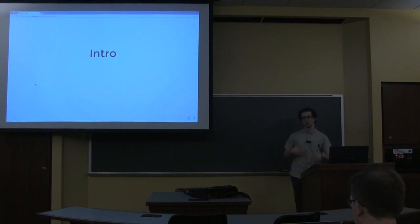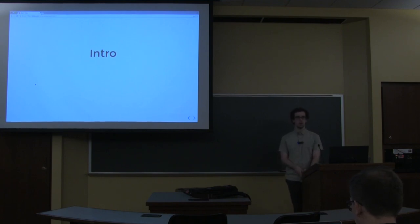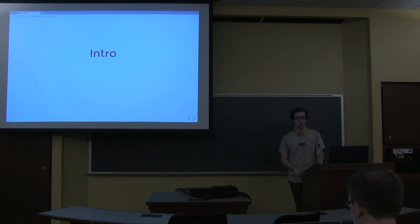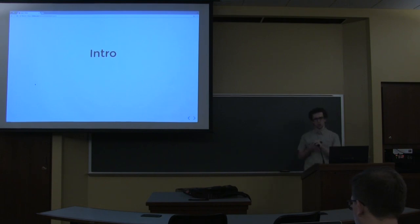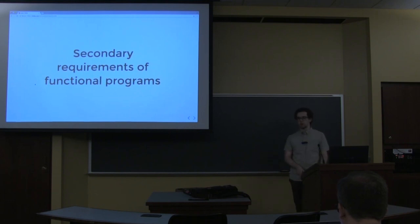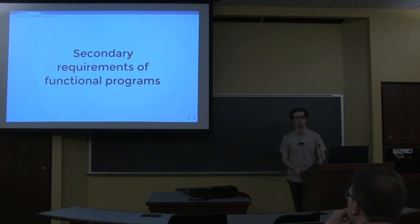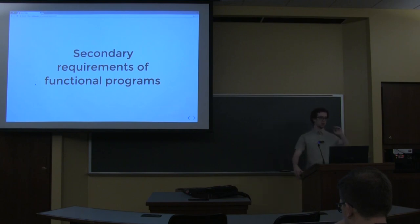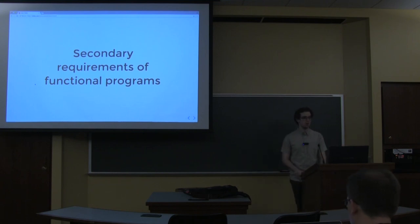I want to talk about this general problem. The talk title says Reader T, and I'm going to touch on Reader T—it's kind of important to what I'm going to say—but I'm trying to peel back the layers of a general problem in the FP community. The problem is secondary requirements for functional programs. Functional programmers have a reputation: people think 'type astronaut'—someone who wastes time abstracting things out that don't need to be abstracted, just because it's fun and appealing.